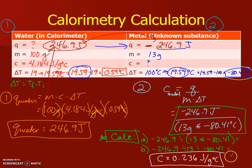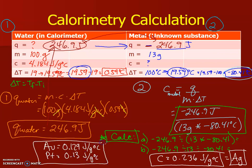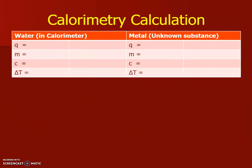If you look on the periodic table, that matches up to silver. Gold is 0.129 joules per gram degrees Celsius, and platinum is 0.13 joules per gram degrees Celsius. So we know that it can't be that because it's going to have too high of a specific heat.